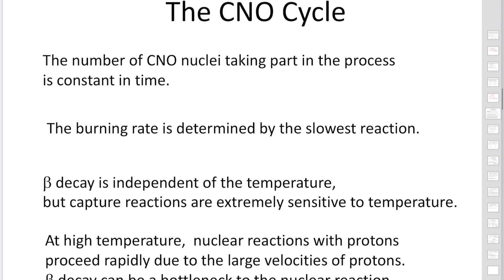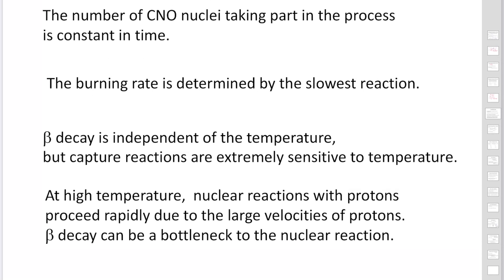The number of CNO nuclei taking part in the process is constant over time. The burning rate is determined by the slowest reaction. Beta decay is independent of temperature, but proton capture reactions are extremely sensitive to temperature. At high temperatures, nuclear reactions with protons proceed rapidly due to the large velocity of protons, so beta decay can become the bottleneck for the reaction chain.